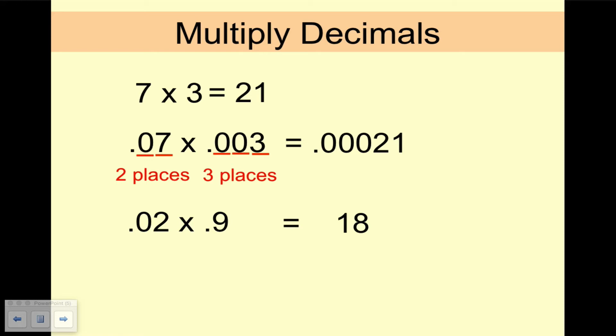All right, we know that 2 times 9 is 18. How many decimal places should there be in the answer? So we add the number of decimal places in each factor. That's 2 places and 1 place. So we want 3 places in our product. 0.018 has 3 places.